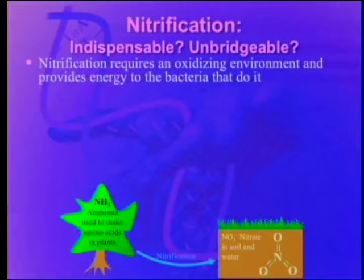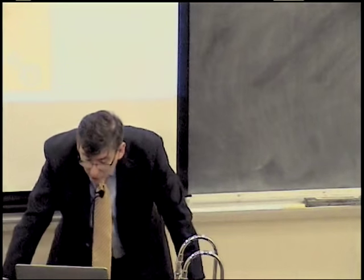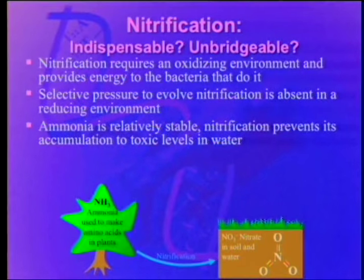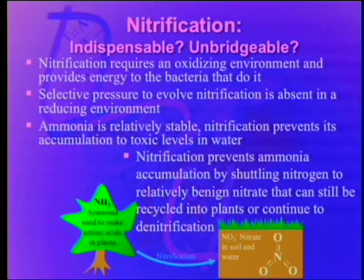Is nitrification indispensable and unbridgeable? Nitrification requires an oxidizing environment and provides energy to the bacteria that do it. Selective pressure to evolve nitrification is absent in a reducing environment. So if you're starting life with a reducing atmosphere, this isn't going to evolve. Ammonia is relatively stable, but nitrification prevents its accumulation to toxic levels in water — ammonia is toxic. Nitrification prevents ammonia accumulation by shuttling nitrogen to relatively benign nitrate that can still be recycled into plants. Bridging it in one way or another seems kind of difficult.